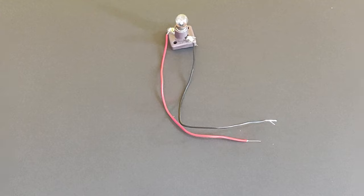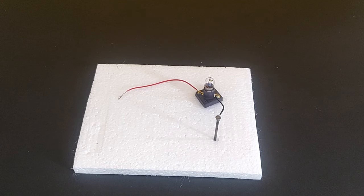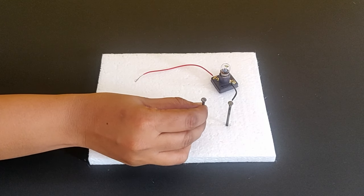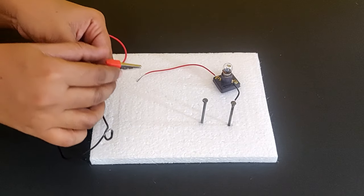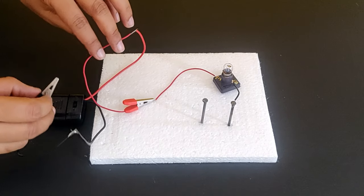Mount the torch bulb in the torch bulb holder and connect two insulated wires to the two terminals on the torch bulb holder. Wrap the end of one of the lead wires from the torch bulb holder to one of the iron nails. Insert this nail into the thermocol board so that it can stand on its own. Now insert the second iron nail about an inch away from the first nail. Connect the crocodile clips from the battery cell holder to the free lead wire from the torch bulb holder and the second nail.